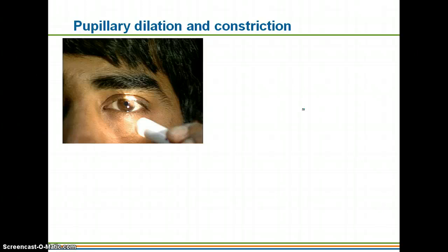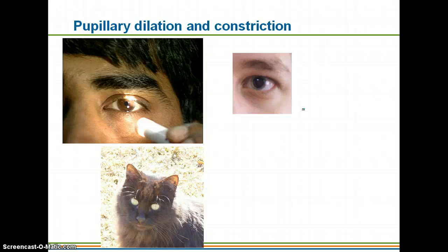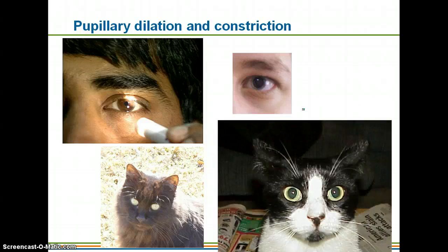This slide shows pupillary dilation and constriction in both humans and in a cat. If you shine light onto the eyeball, it will cause the pupil to constrict to adjust for the amount of light. If you've been to an ophthalmologist or optometrist, they'll actually dilate your eyes to get a good view of the retinal walls. Cats have the same response, but the shape of their pupil is different — in bright light their pupils are very constricted, while in the dark they open wide. It takes a little while for eyes to adjust when you first turn the lights off.